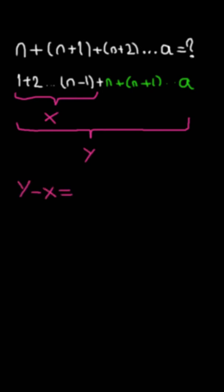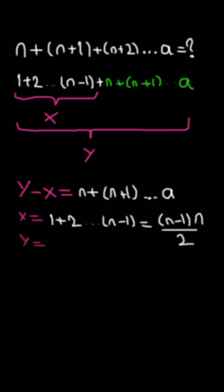Now, we need to find y minus x to find the sum of our expression. If we apply Gauss method, x would be equal to n multiplied by n minus 1 divided by 2. And with the same logic, y would be equal to A multiplied by A plus 1 divided by 2.